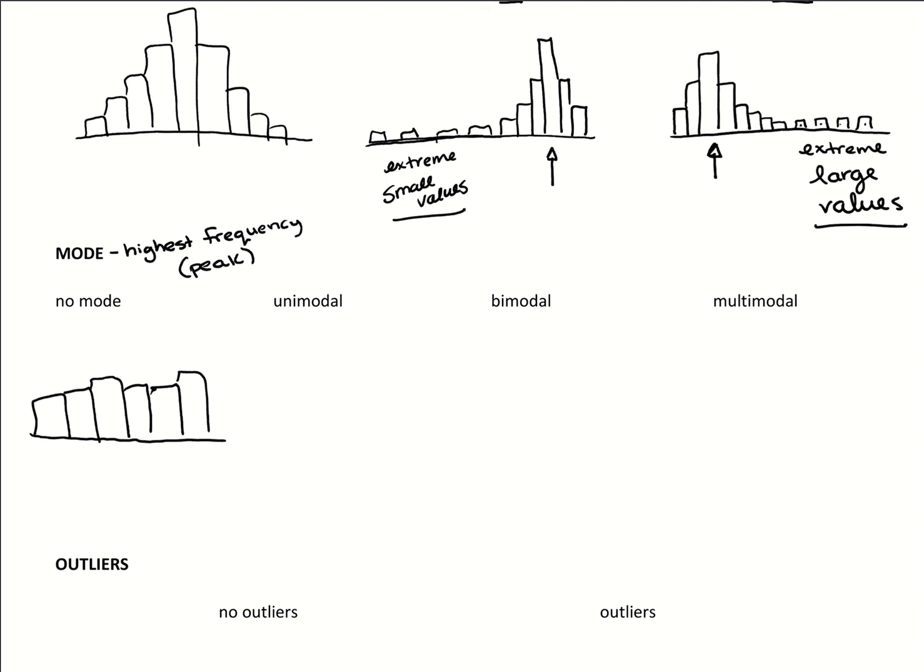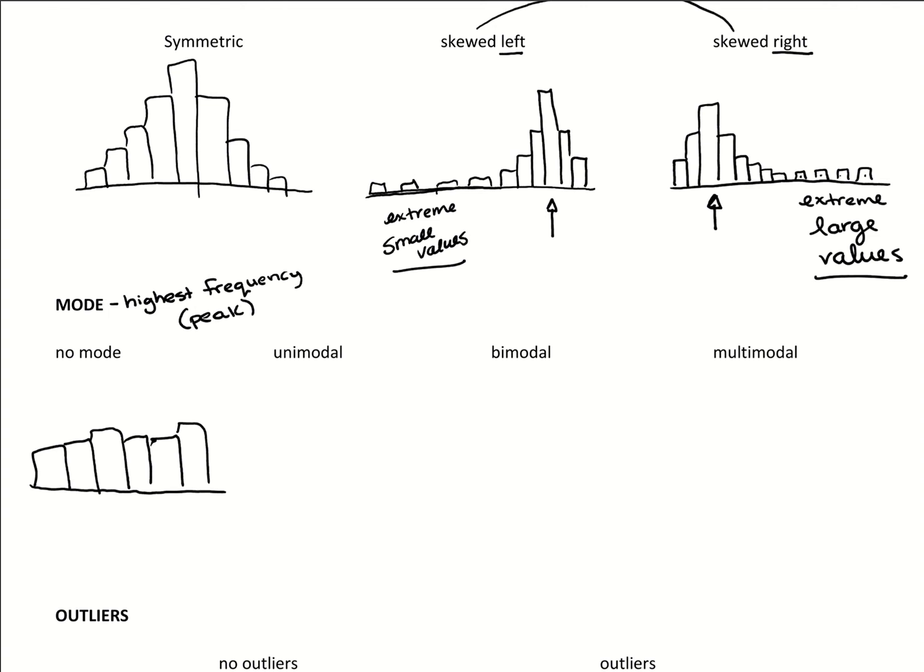Unimodal would be a single peak, and that's actually what we've drawn up here above. So symmetric, this left skewed, and right skewed, those are all examples of unimodal graphs because they have a single peak.